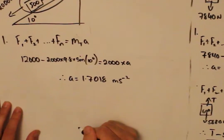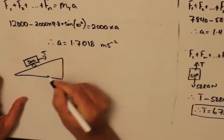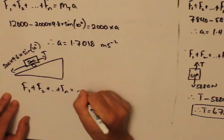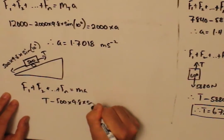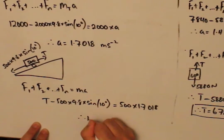And isolating the caravan gives us T minus 500 times 9.8 times sine of 10 degrees equals 500 times 1.7. This leads us with a tension force equal to 1,702N.